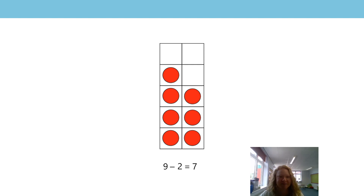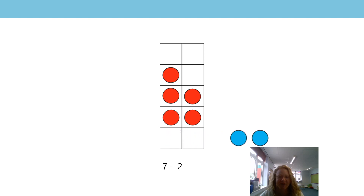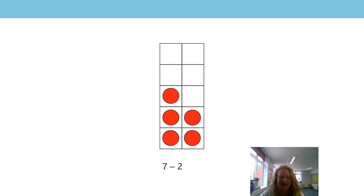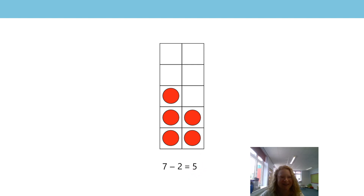It's still an odd number. Should we see if it works with the seven? Let's give it a try. Seven subtract two — there they go. What have we got now? Five. So seven subtract two is equal to five. We had our odd number, we subtracted two, and now we've got five, which is the previous odd number. Well done!